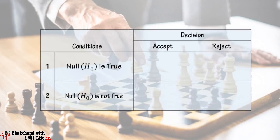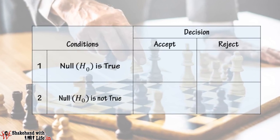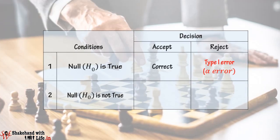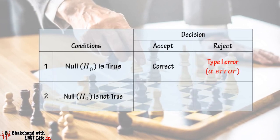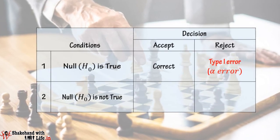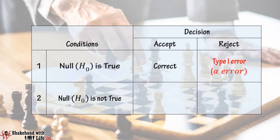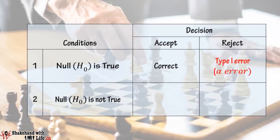Concerning decision making, we have two conditions: either the null hypothesis H0 is true, or the null hypothesis H0 is not true. If we accept the null hypothesis because it is true, that implies we are taking a correct decision. But if we reject the null hypothesis even though it is true, that implies we are taking a wrong decision — meaning we are making a Type 1 error, or alpha error.